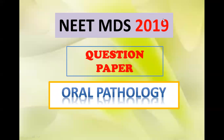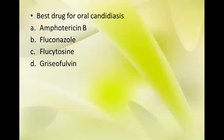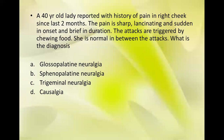Hello everyone, welcome back to my channel. These are the 2019 oral pathology questions. The first question: what is the best drug for oral candidiasis? Option A is amphotericin B, B is fluconazole, C is flucytosine, and D is griseofulvin. The best answer is fluconazole.